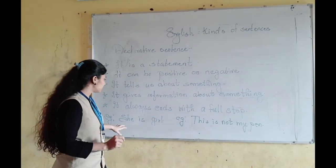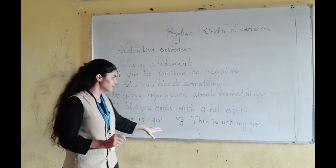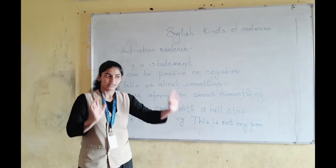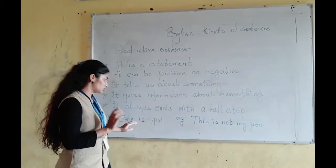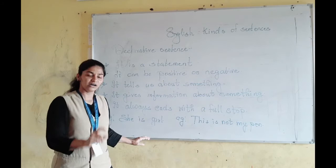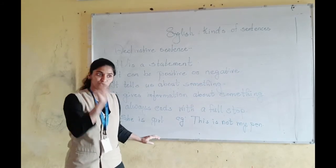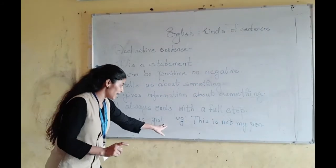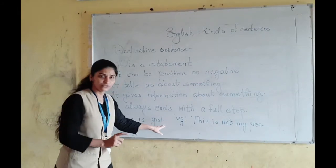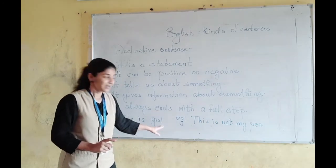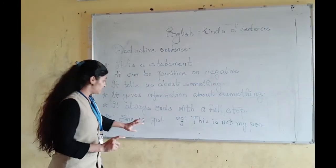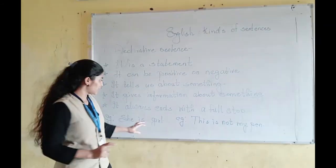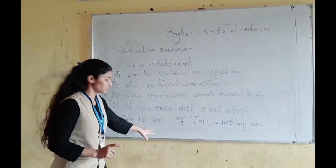For example: 'She is a girl.' There will be no change in that — she is a girl. At the end, I have put a full stop. I have declared this sentence that she is a girl. This is a positive sentence.